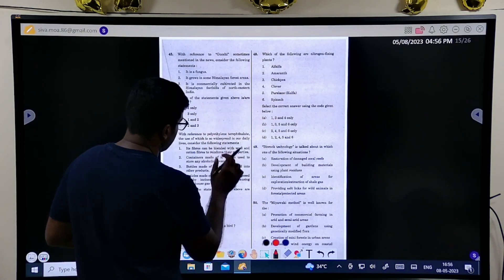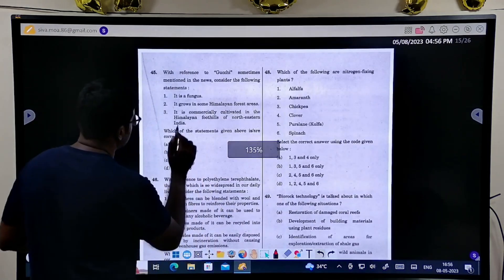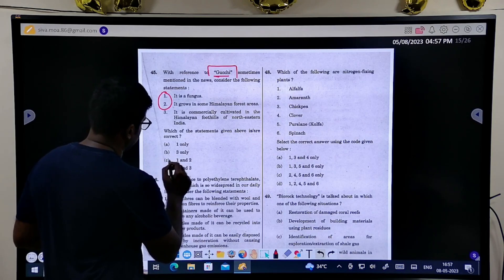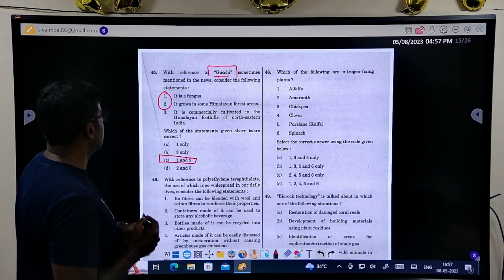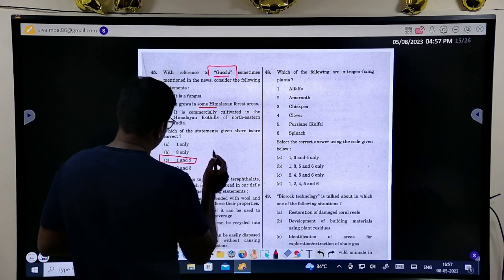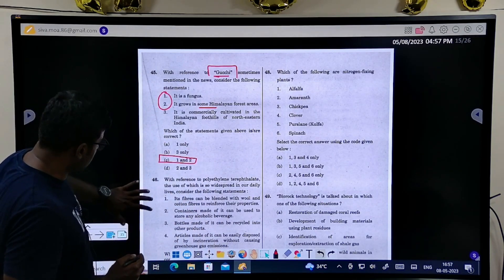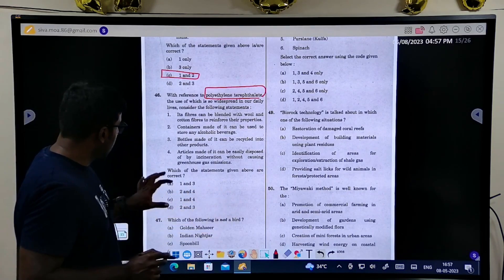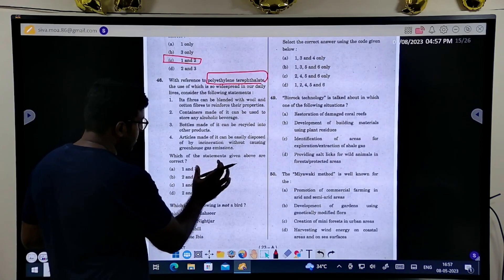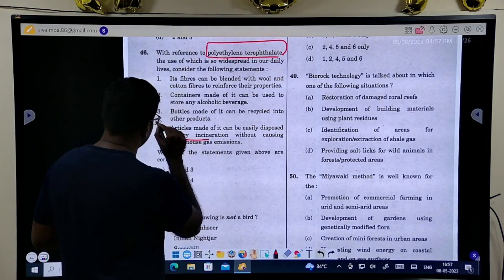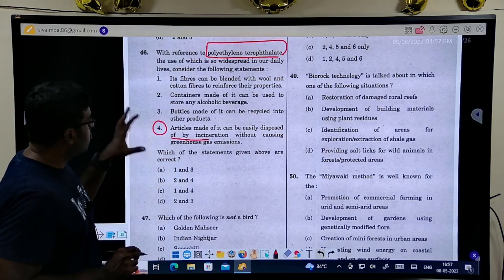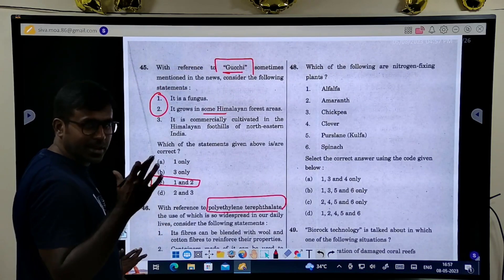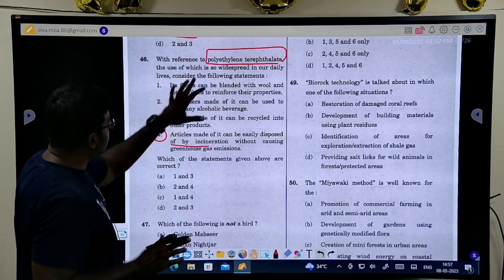And this question also, I think 1 and 2 is the answer. But this question, I was not sure. What is gucci? I do not know. But this, it grows in Himalayan forest areas is the answer. It is commercially cultivated in the Himalayan foothills of northeastern India. Either this or this. The point is that this question I do not know.